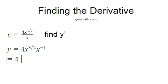So we're going to have 4 times x raised to... Now this is 3 halves minus 1. And so 3 halves minus 1 is just going to be a half. So remember 3 halves is like 1.5, 1.5 minus 1 is 0.5 and 0.5 is a half.